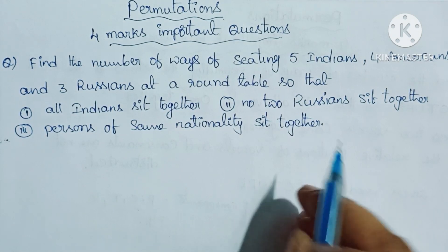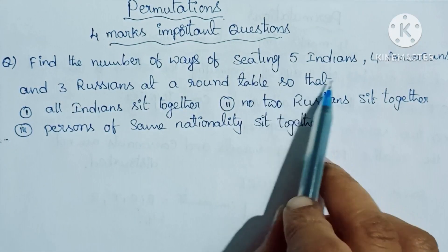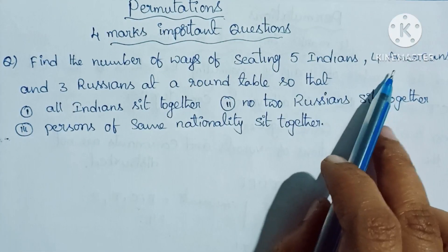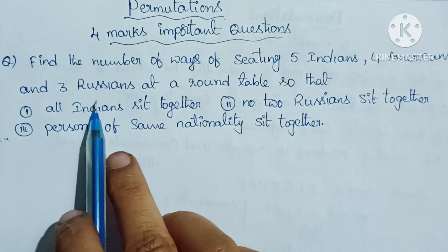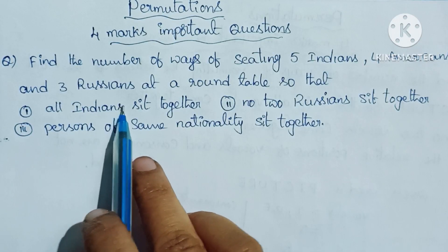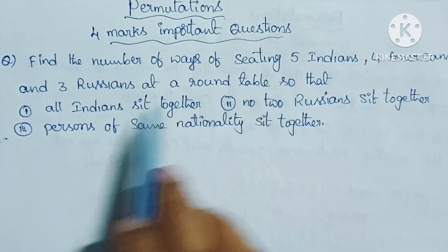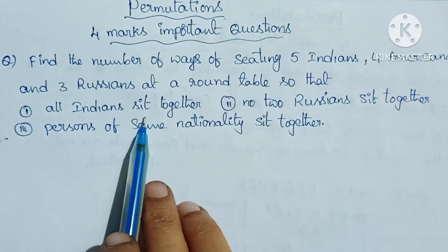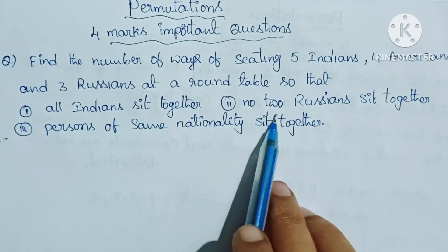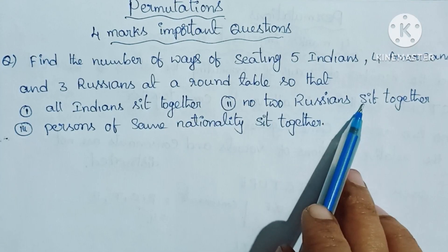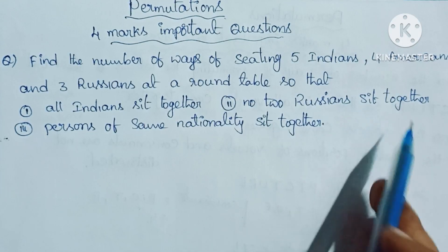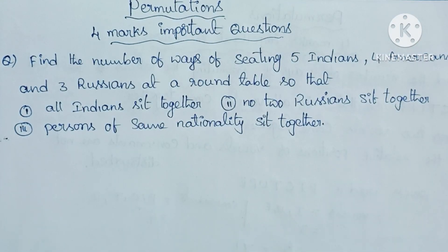Find the number of ways of seating 5 Indians, 4 Americans, and 3 Russians at a round table so that: all Indians sit together; no two Russians sit together; and persons of same nationalities sit together.